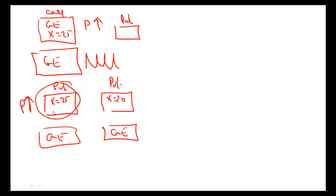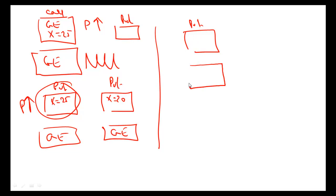Next: if the price of the underlying stock decreases, what happens to the value of a put or a call? Consider a put option on GE with a strike of 25. If the price of GE stock was initially 25 and then went down to 20, is that good for the holder of the put? Yes — when the price goes down to 20, the right to sell for 25 is more valuable, so that would be good.